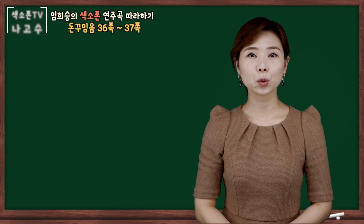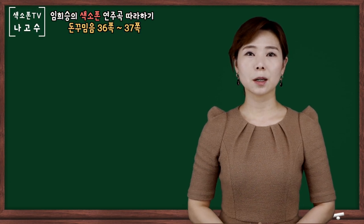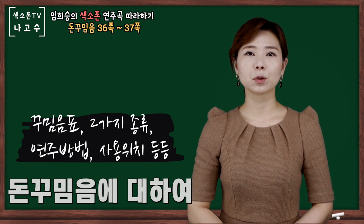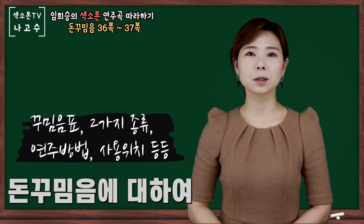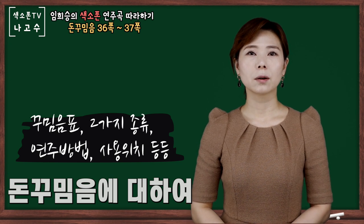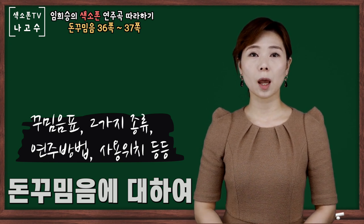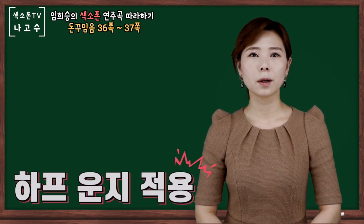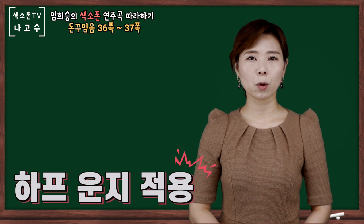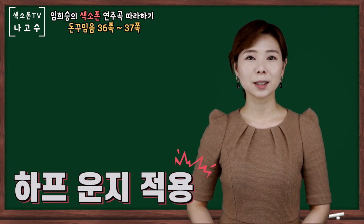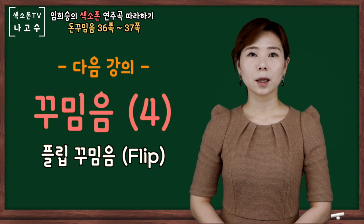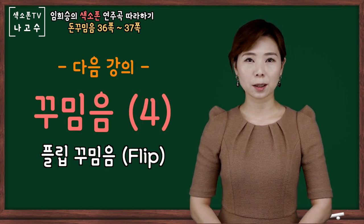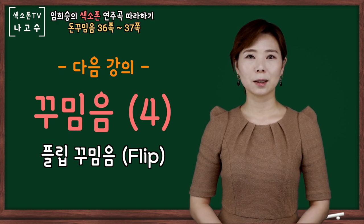돈 꾸밈음의 표도 살펴보았고, 연주 방법도 살펴보았고, 어떤 부분에 표현을 하는지도 살펴보았는데요. 이 부분을 연습하실 때 잔결 꾸밈음, 프랄트릴러 부분에는 하프 운지를 적용하여 연습하시면 자연스럽고 부드러운 돈 꾸밈음을 표현하실 수 있겠습니다. 다음 강의는 일명 트로트 꾸밈음이라고 하는 플립 꾸밈음에 대해서 공부해보도록 하겠습니다. 수고하셨습니다.